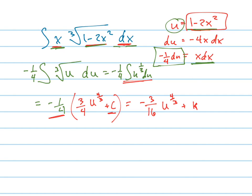And then we do that substitution. We put that u back in there. So this equals negative 3 sixteenths times 1 minus 2x squared to the 4 thirds plus k.